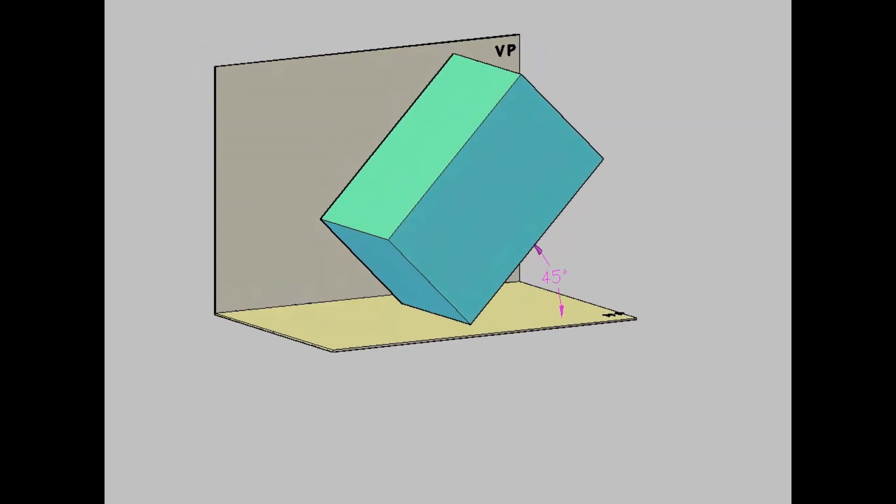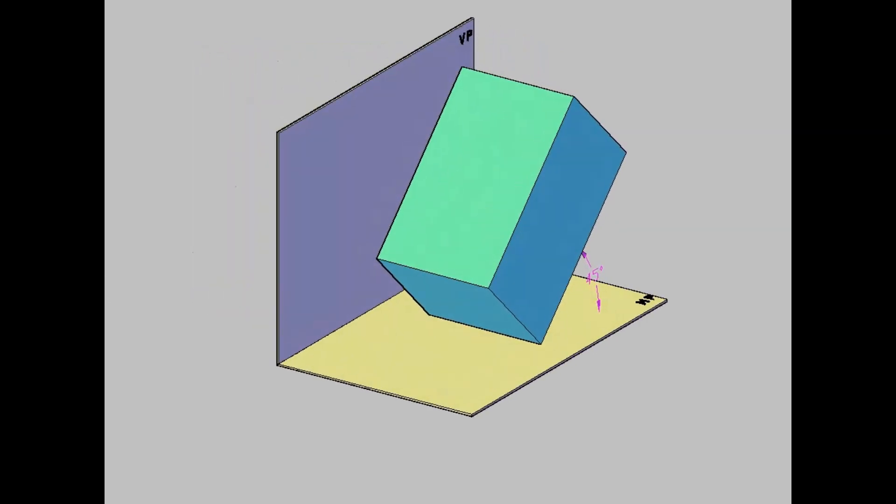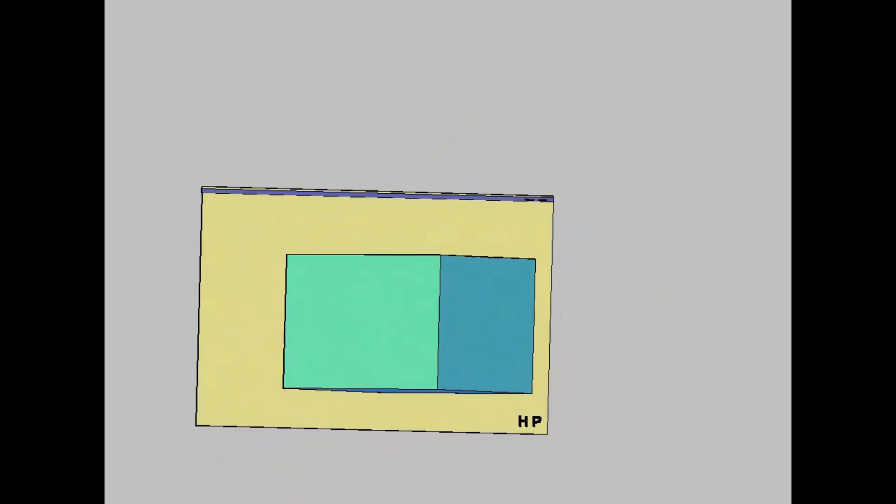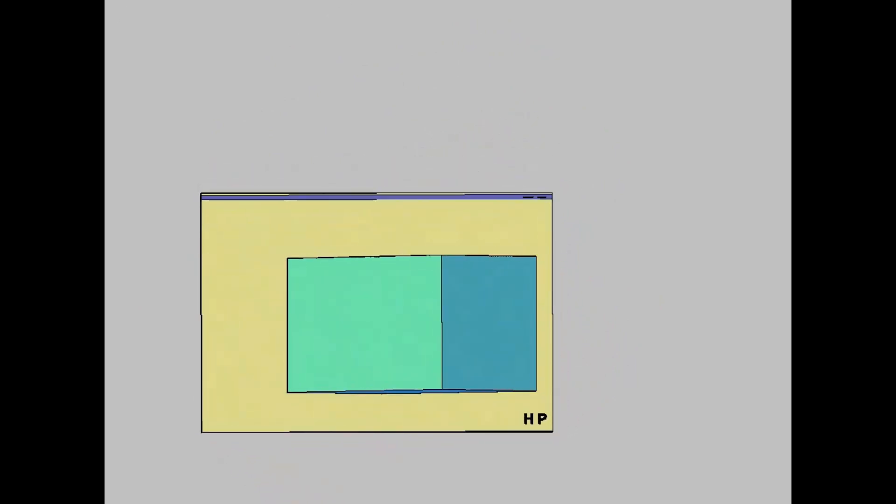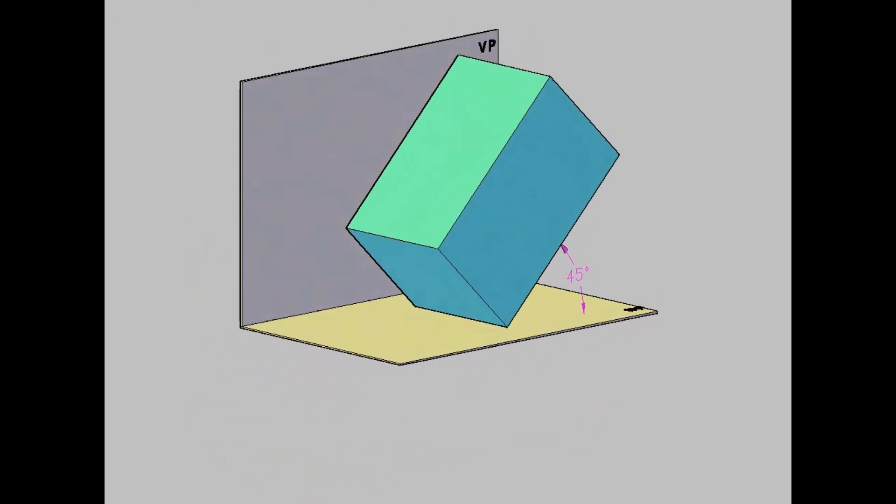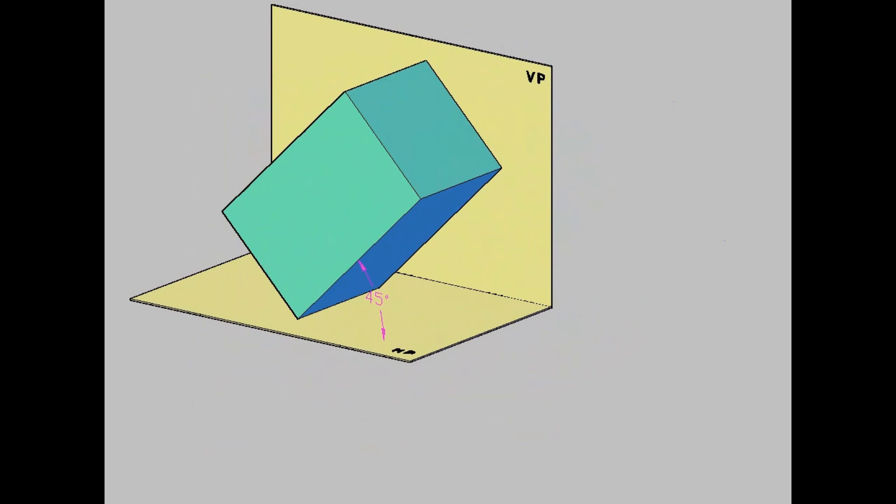In this problem, the square prism is resting on the ground or HP with its base edge. At the same time, the axis is inclined to HP. Whenever a solid is resting with its base edge and the axis is inclined to HP, that particular edge on which the object is resting will be perpendicular to VP.